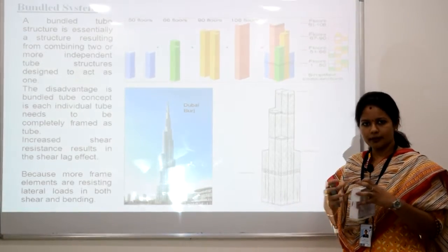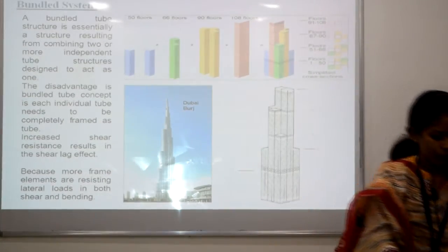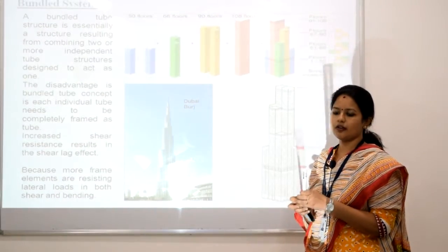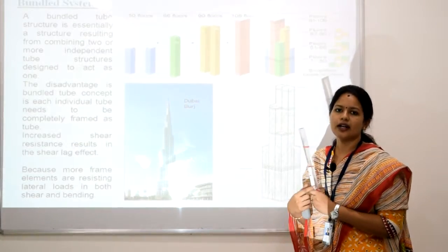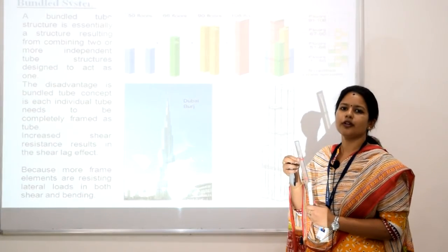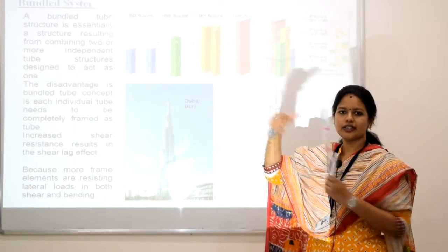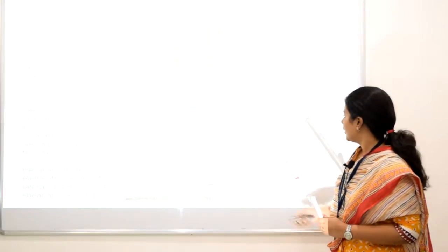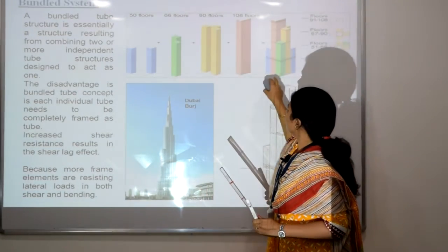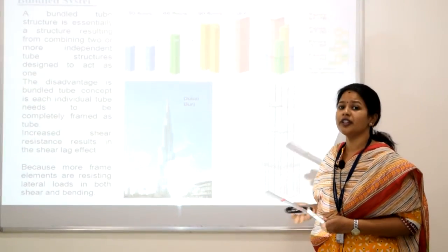Another system is the bundled system. A very good example of a bundled system is the Burj Dubai. The bundled system is nothing but a combination of tubular systems — one or more tubular systems combined together. This is one tubular system, and this is another; the combination of these two together is called a bundled system. You can see single tube, two tubes combined, three tubes combined, and all tubes combined. Because of this, the entire lateral resistance and stiffness of the building is increased.